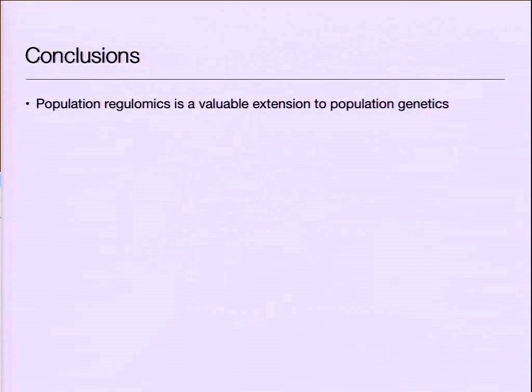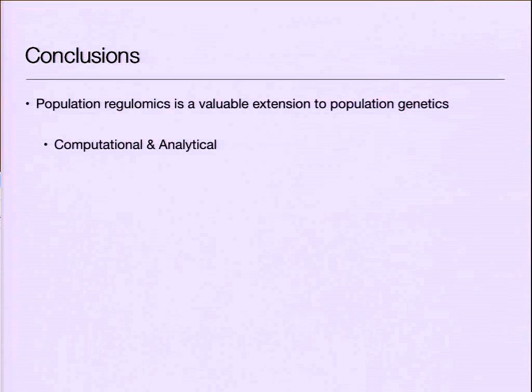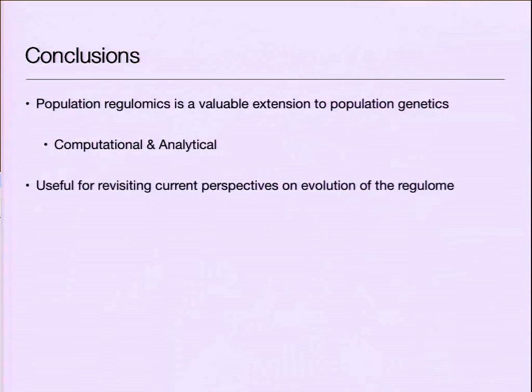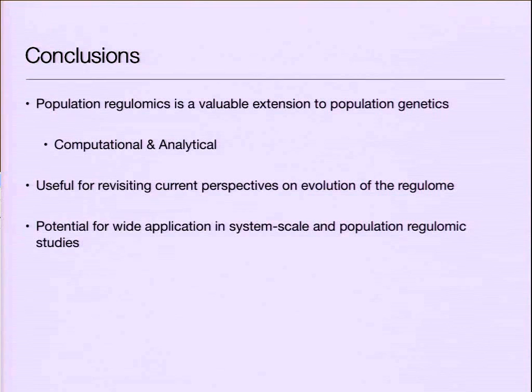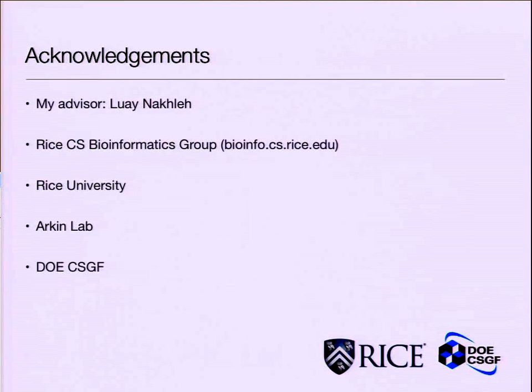In conclusion, I think population regulomics is a valuable extension to population genetics. There's also a whole set of analytical measures and calculations you can run on these cis-regulatory networks. I think it's useful to revisit current perspectives from an evolutionary angle — we have a lot of adaptive mirages, and what we think might be adaptive is actually just neutral evolution at work. There's potential for wide application of these studies in looking at how evolution would change and affect your systems. I'd like to thank my advisor Louis Nakhle, the Arkin Lab, and the DOE CSGF. Thank you.